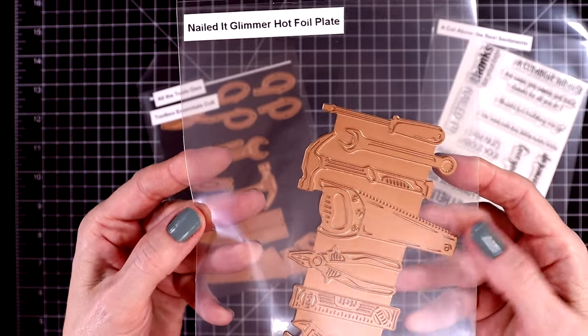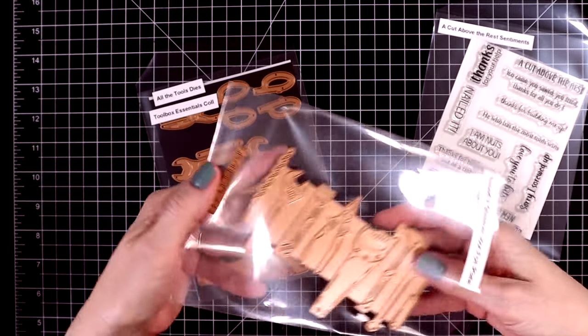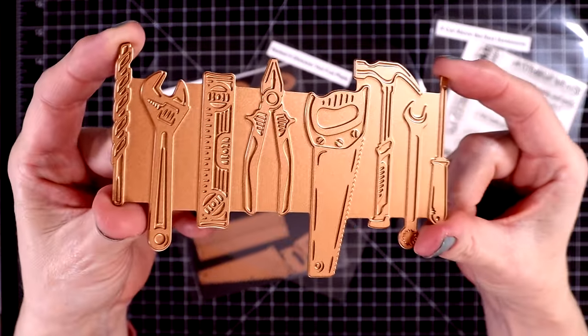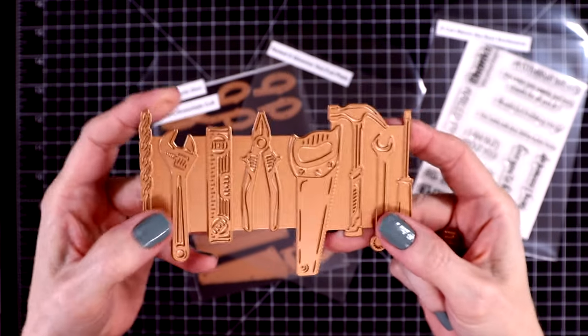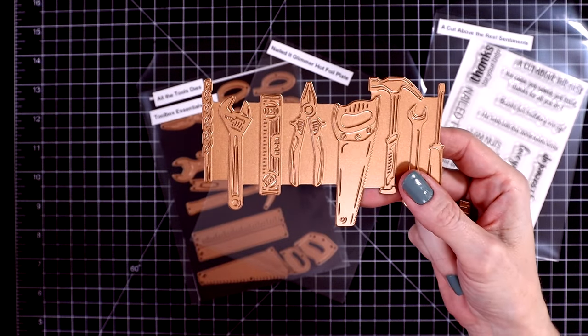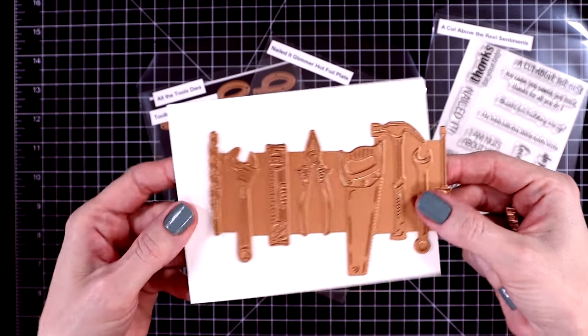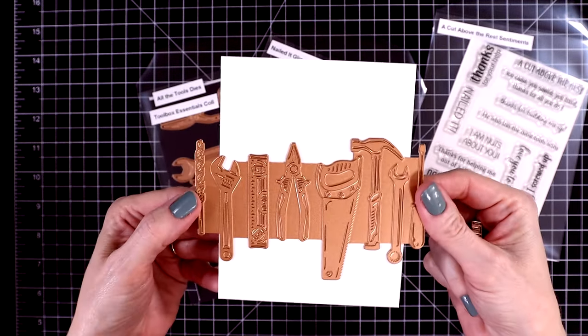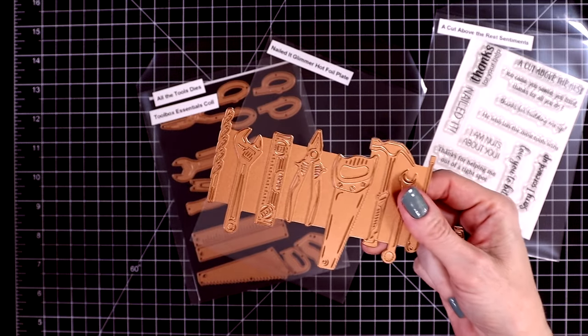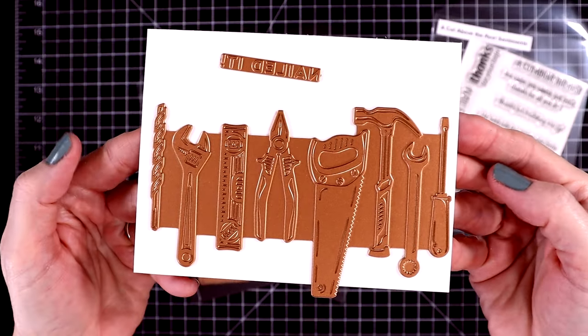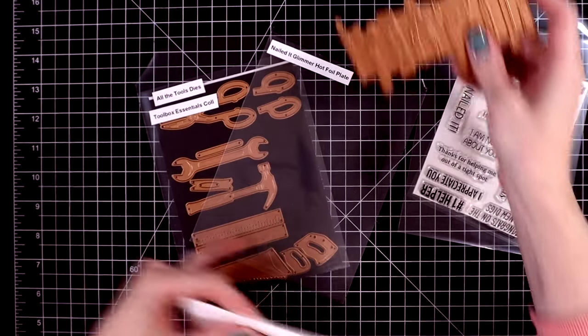And here is the glimmer hot foil plate. This one's called Nailed It. It's this strip of tools - you got a saw, a hammer, a wrench, and so forth. You glimmer them all together, which makes it super easy to hot foil. It fits beautifully on an A2 sized card, however you can use it on any size card that you'd like. It also has a sentiment included that says Nailed It.